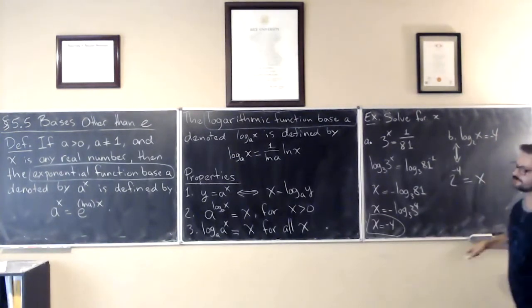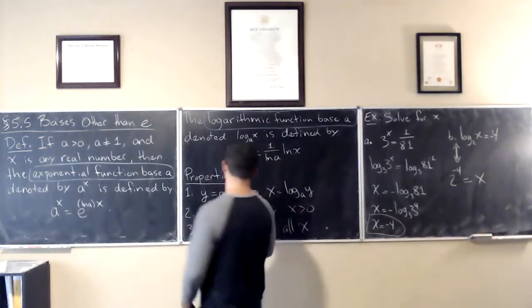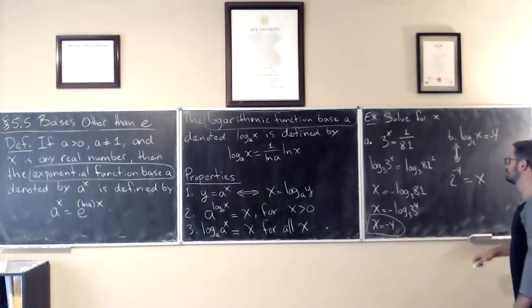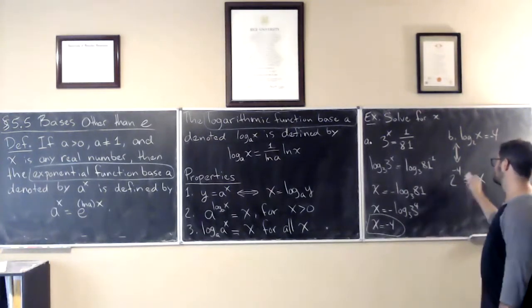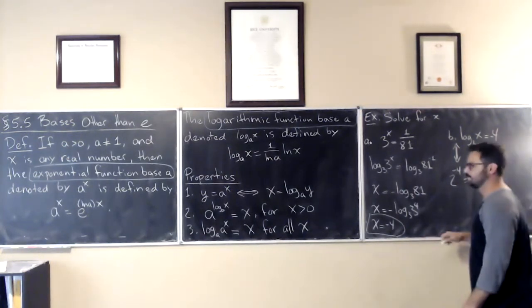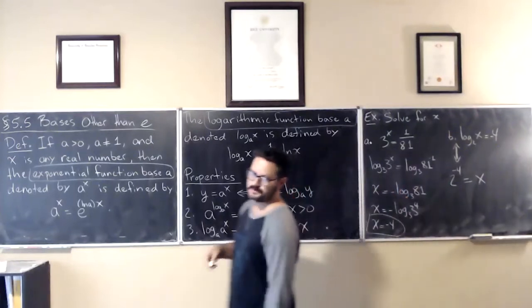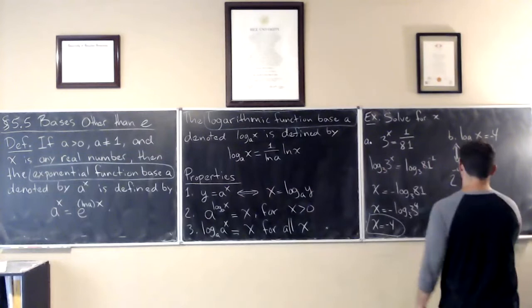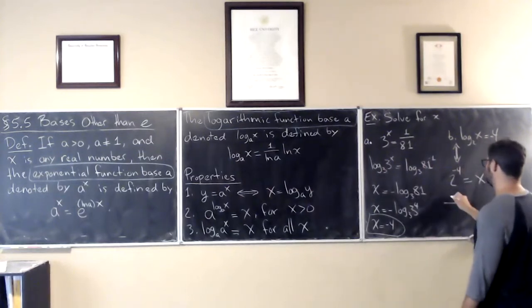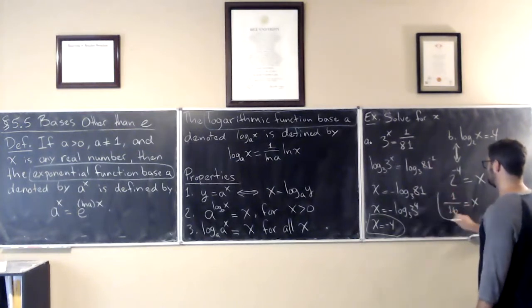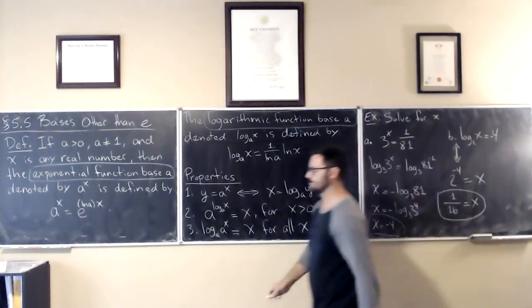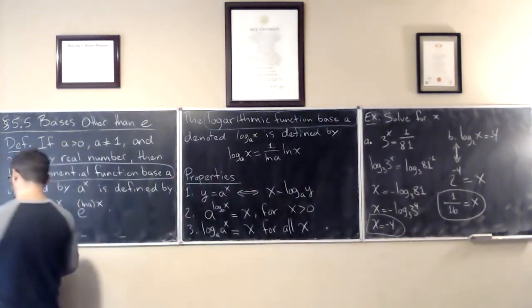So this is true if and only if this is true. And what does this become? 2 to the power of negative 4, so 2 times 2 is 4, times 2 is 8, times 2 is 16. So it's 1 over 16. These are just algebraic things.